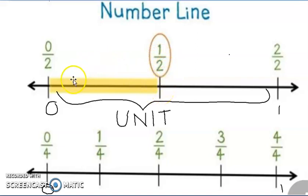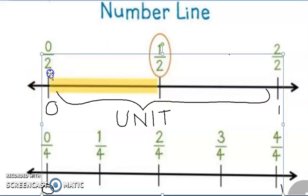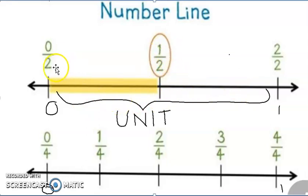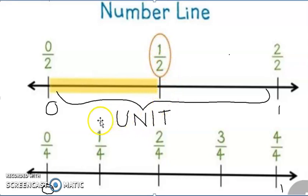For example, when we are representing the fraction 1 upon 2, what do you do? You divide this one single unit into two equal parts. So you can see two equal parts here. Therefore, from 0, my first fraction — where I have divided — it becomes the first part out of total two parts. So, 1 upon 2.